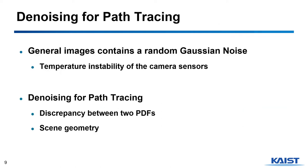For denoising, we can first apply general denoising methods. However, the problem is quite different. General image denoising deals with random Gaussian noises due to camera sensors. In our case, the noise is because of the probability density function and the scene geometry, since scenes with high-frequency details and complex lighting will have more noise than others.